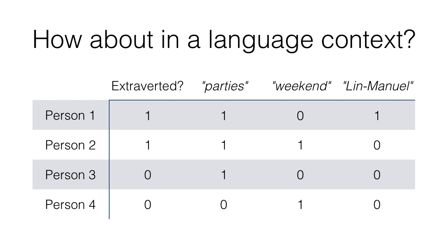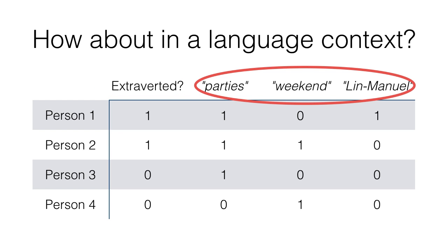Just a side note: when we build these models, the data look more like a matrix. The first column, 'extroverted,' is our outcome variable or dependent variable — what we're trying to predict. The other columns are our independent variables, the features that we're going to use to try to predict the outcome.